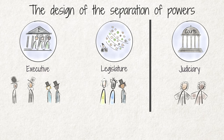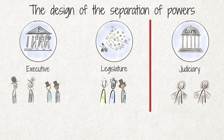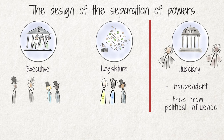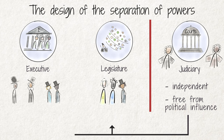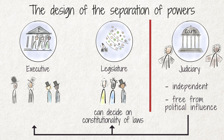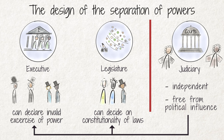However, the separation between the judiciary and the other branches of government is usually very strict, as the judiciary must act independently and free from political influence. In South Africa, the judiciary has the power to pronounce upon the acts and decisions of the executive and legislative branches of government. It can decide on the constitutionality of laws passed by the legislature, and it can declare invalid any exercise of power by the executive that is not authorised by law or that is in conflict with the Constitution.